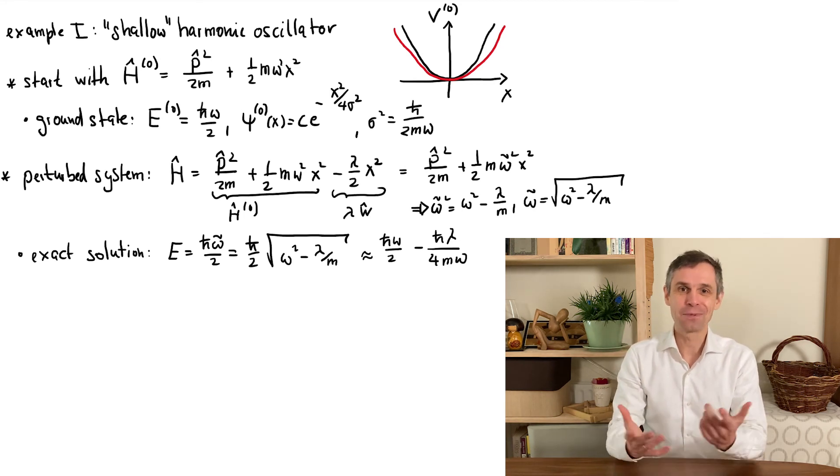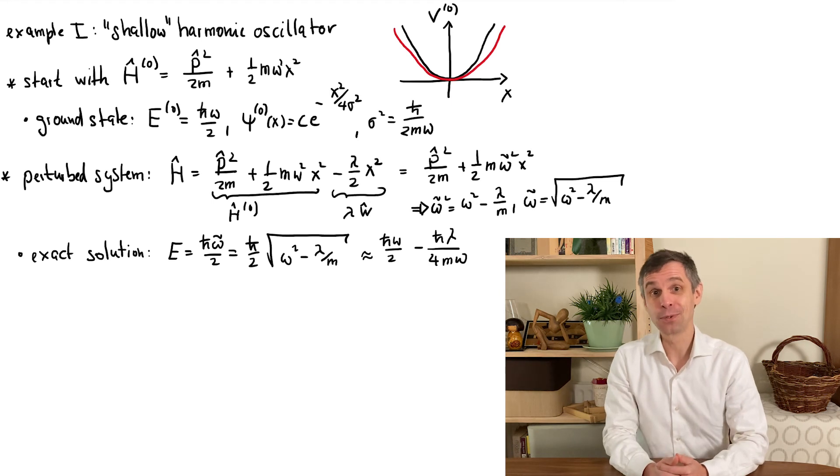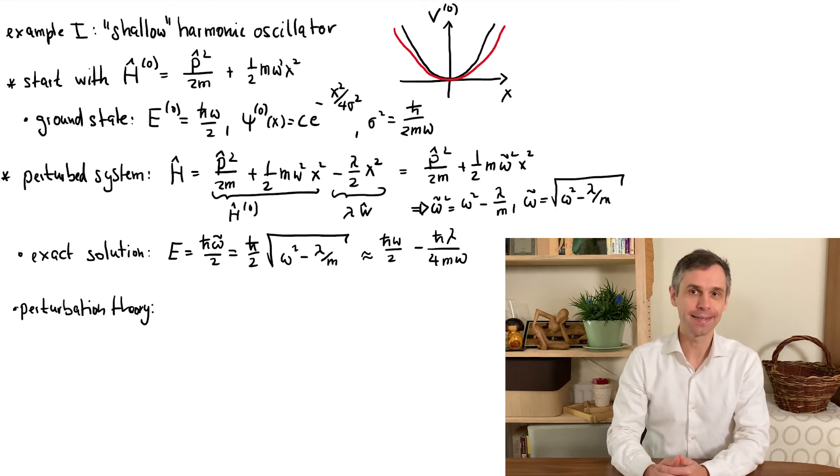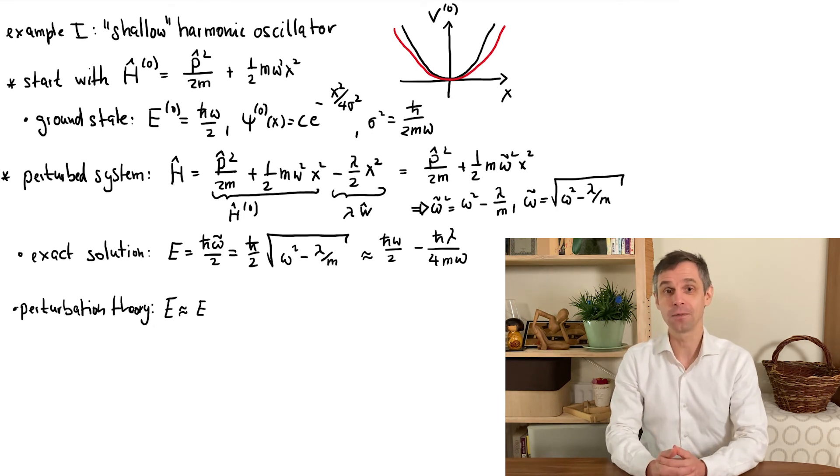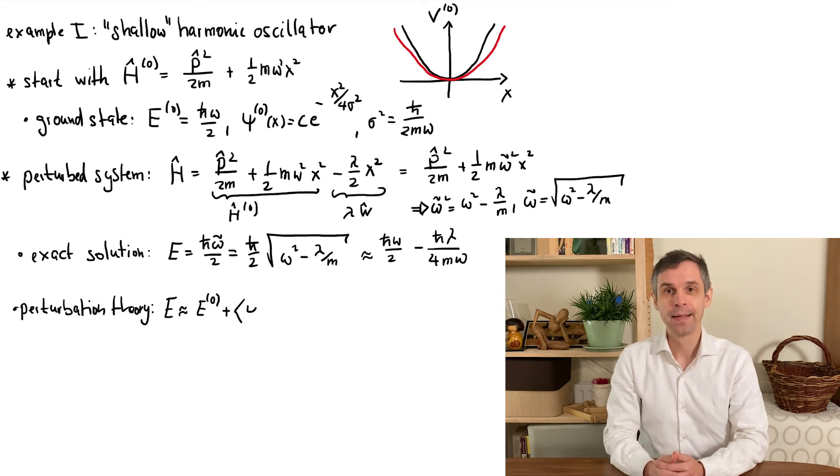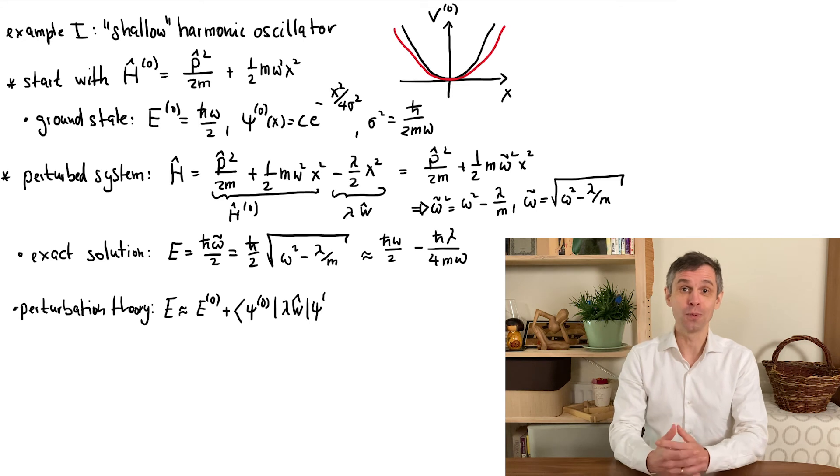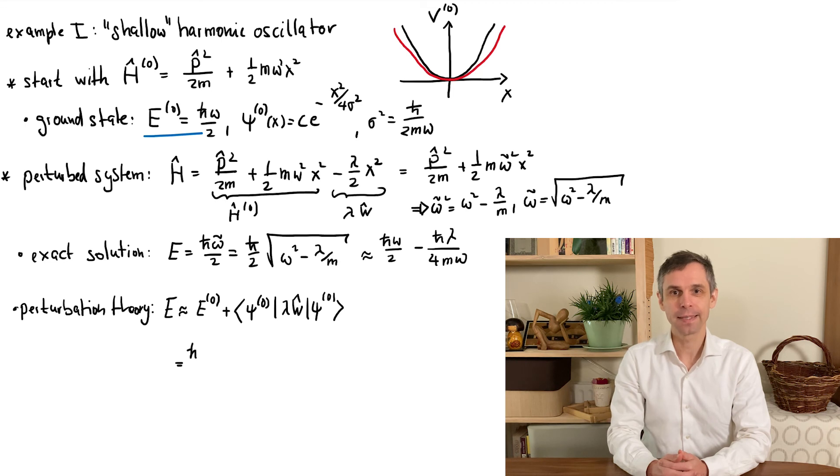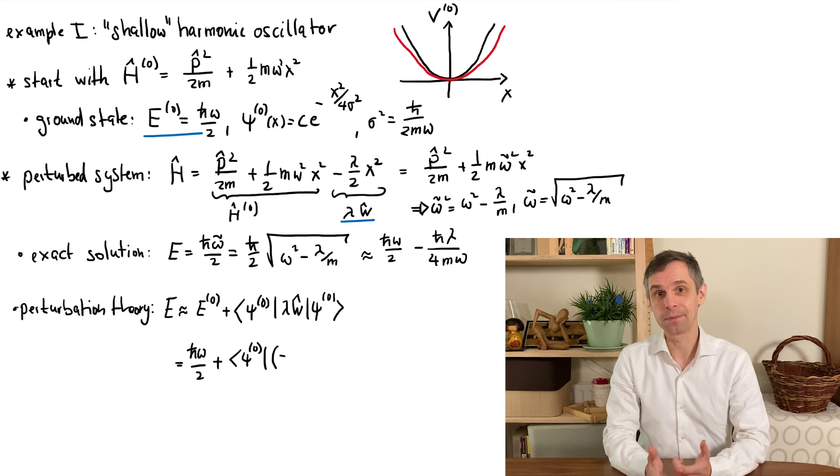Okay, so now let us see if we can recover this expression from our main result of perturbation theory. According to this, the new ground state energy of this modified harmonic oscillator is close to the ground state energy of the original quantum system, plus a leading correction that is given by the expectation value of the perturbation, evaluated in the ground state of this original quantum system. In the present example, the perturbation is given by minus lambda divided by 2 times x squared.